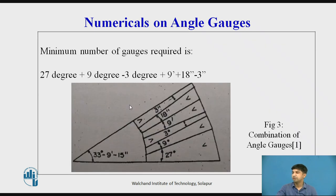So minimum number of gauges required: 27 plus 9, both angles engraved V should be in same direction. Then here opposite direction. So 27 plus 9, 36 minus 3, 33. Same thing, 9 minutes, yes it is already there. Then 18 minus 3, 15 seconds. This is how we solve the problem using the angle gauges.